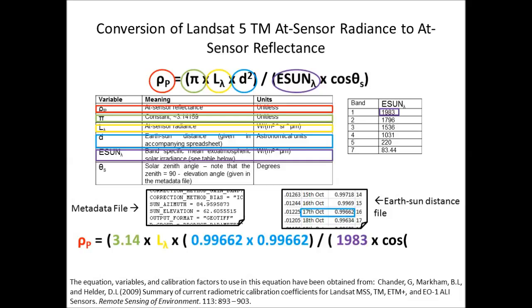Finally, we're multiplying it by the cosine of the solar zenith angle. If you look in the metadata file shown at the bottom left, you'll see the value is given as a solar elevation. What you need to do is use 90 minus that particular value, converting from elevation to zenith. The zenith is 90 minus the elevation.